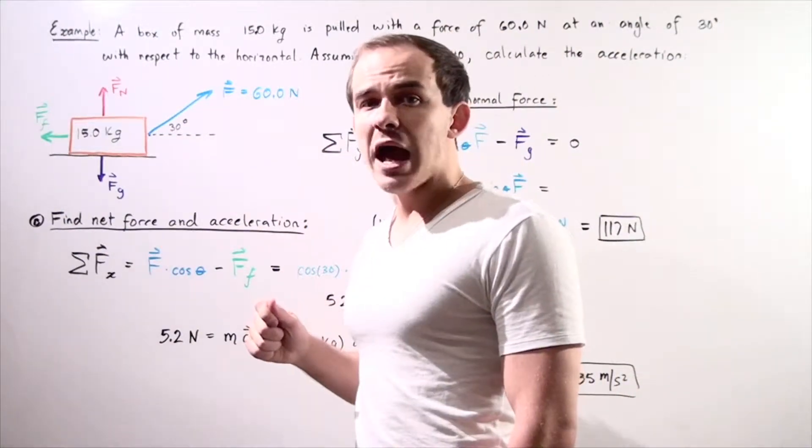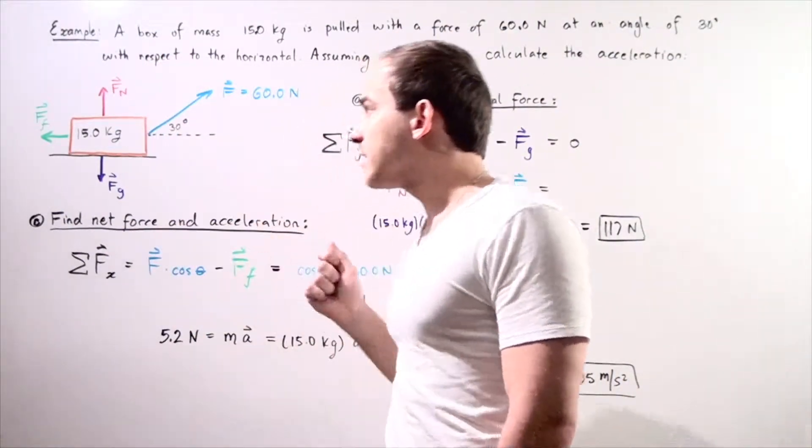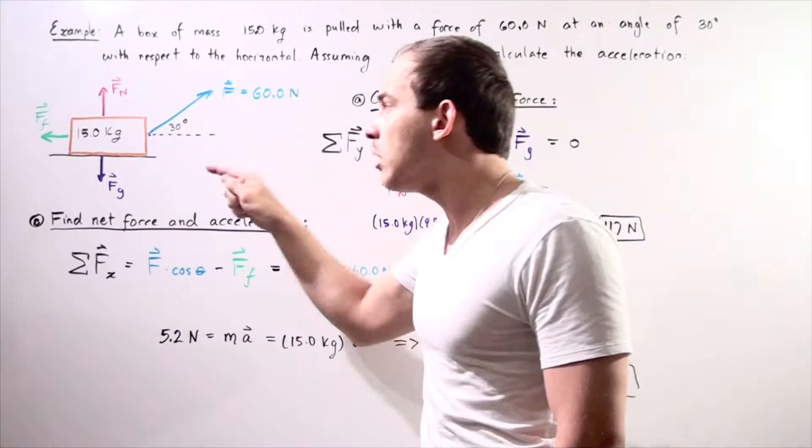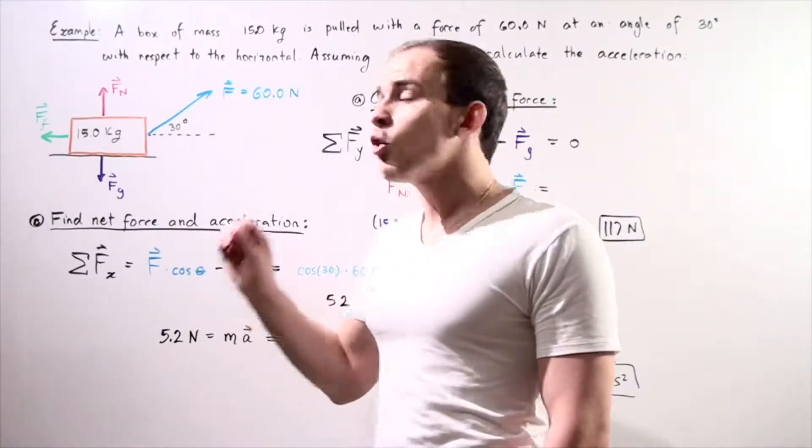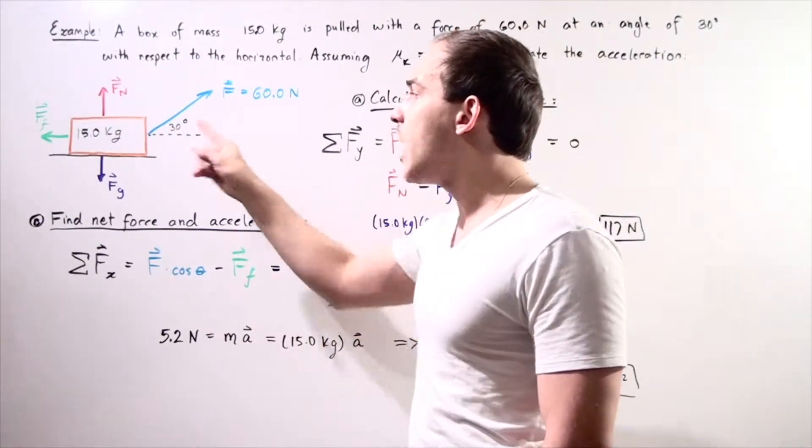We have the force of gravity pulling the box downward and the normal force, the force that our horizontal surface exerts on our box.